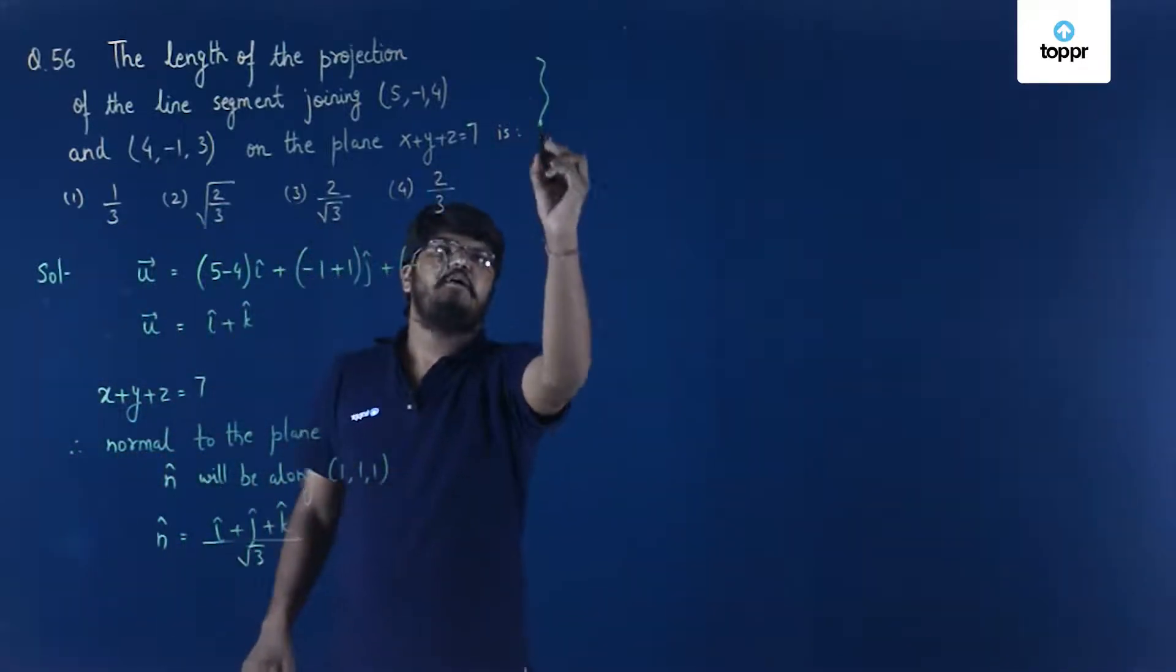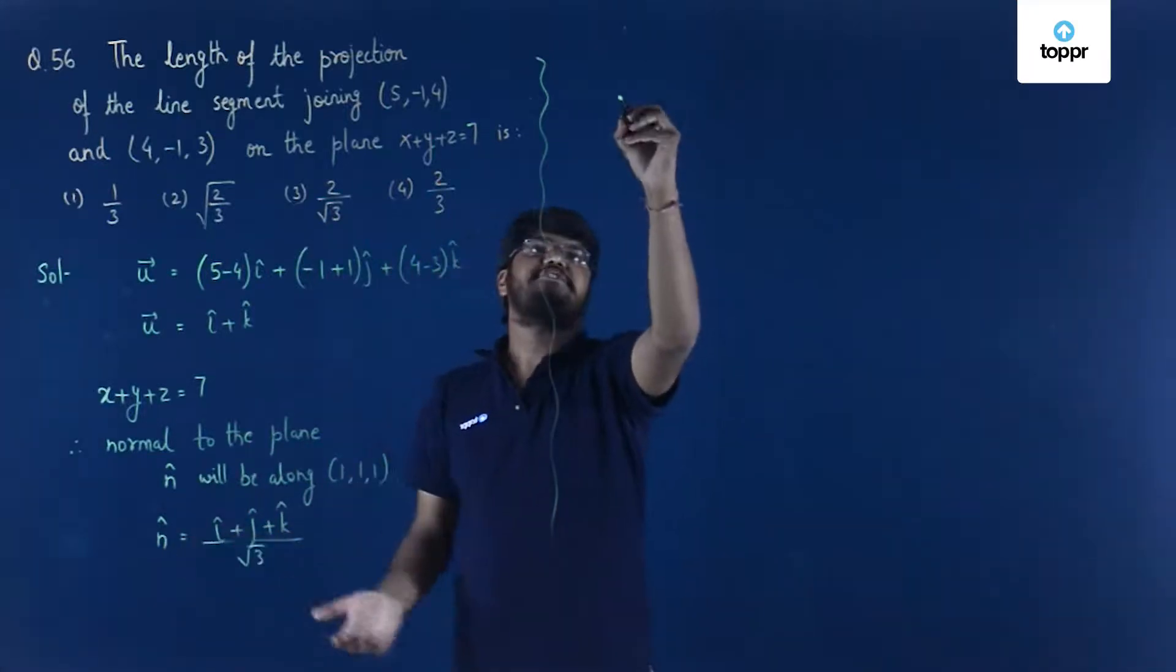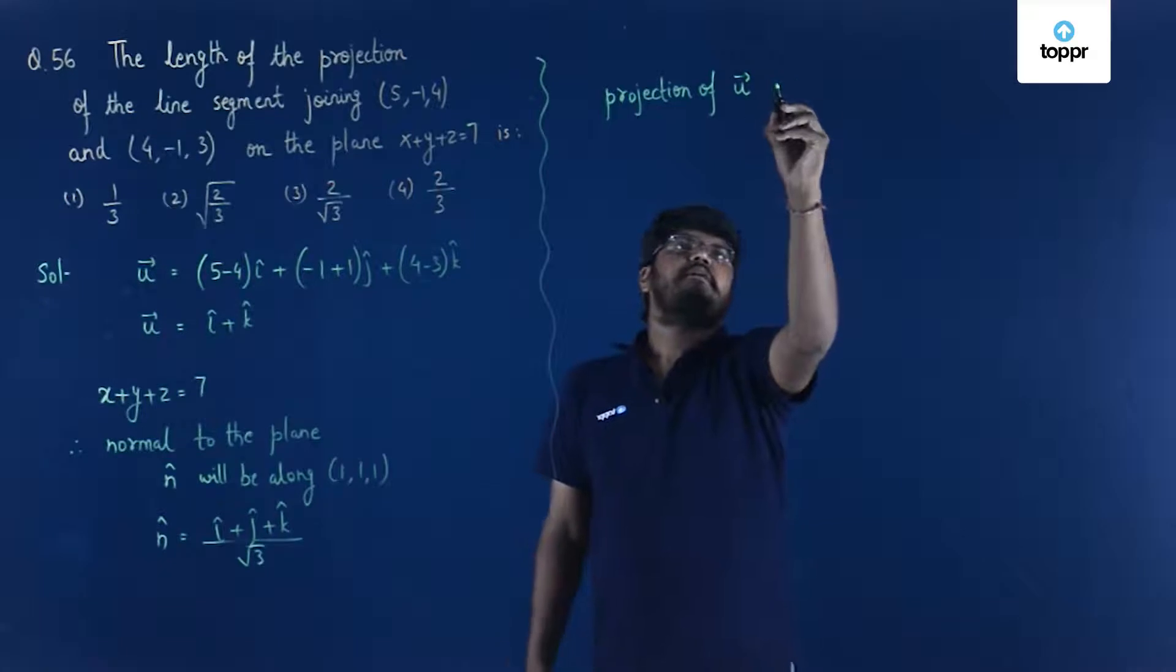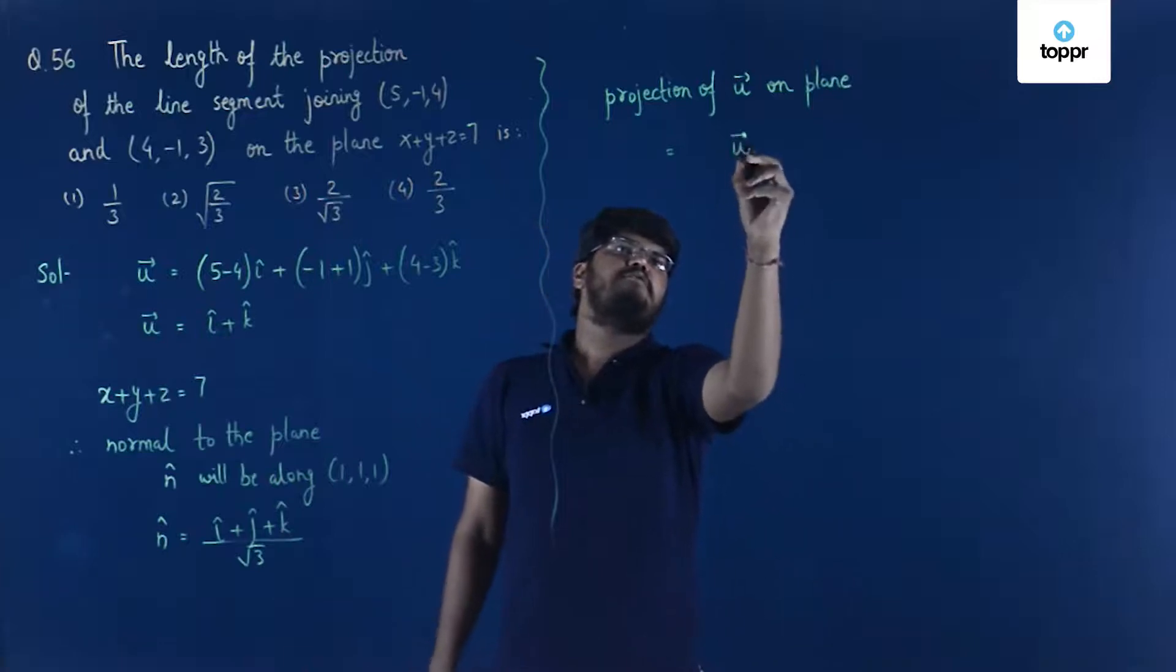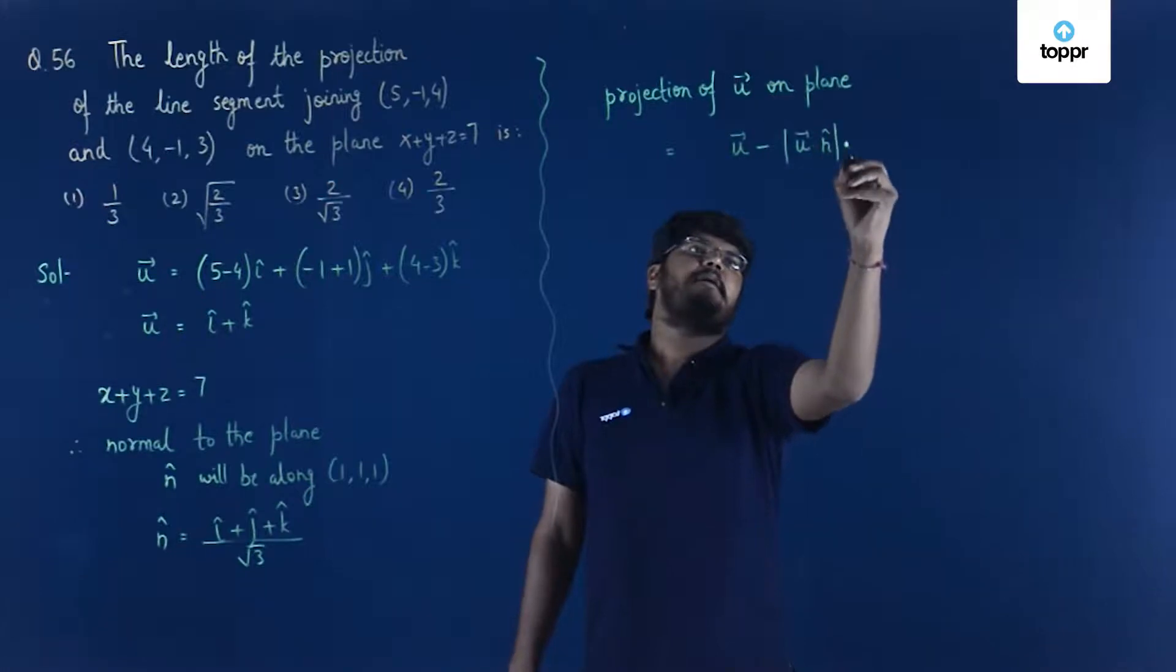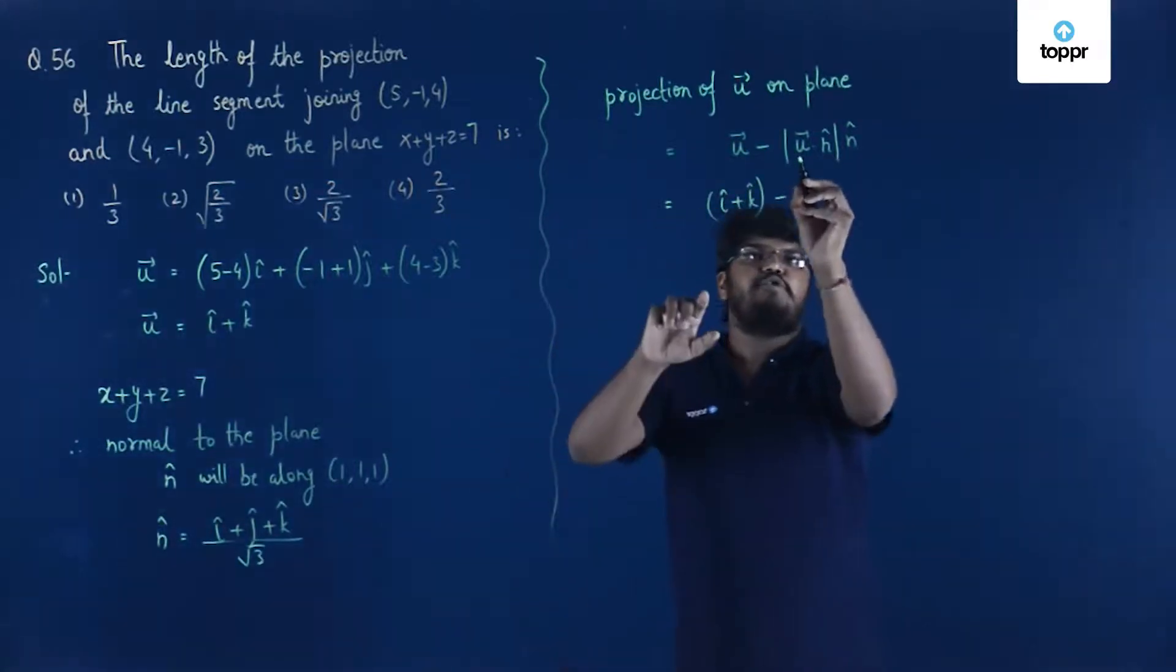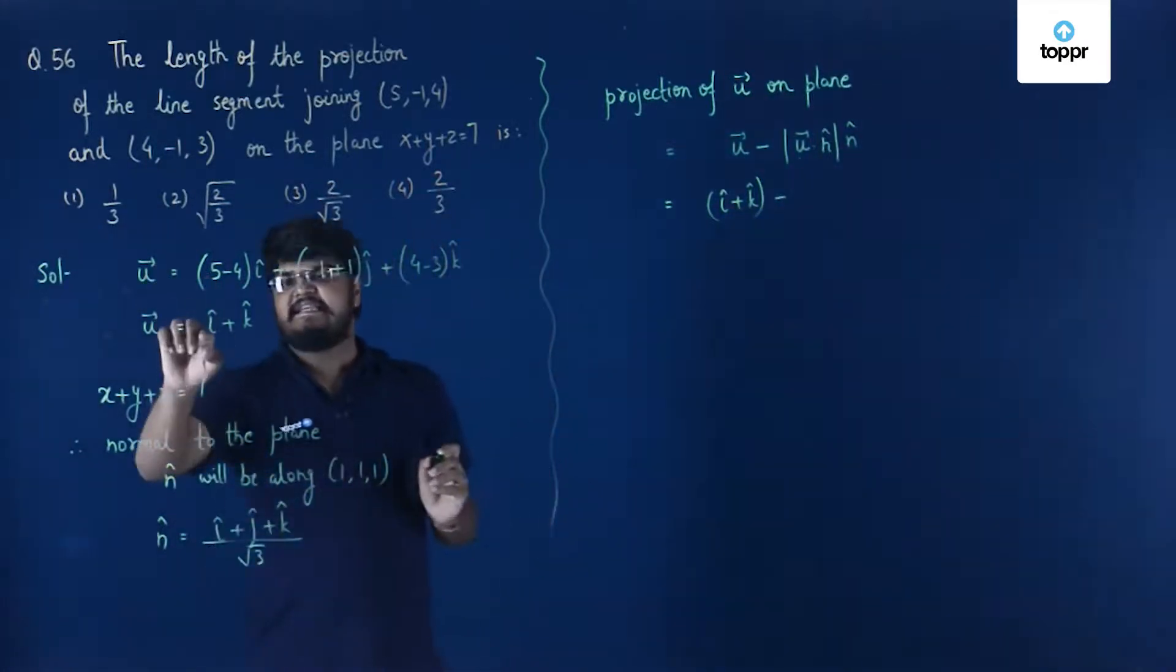Now since we already have our n cap, all we have to do is find out the projection. So projection of u vector on plane is actually equal to u vector minus |u vector · n cap| n cap. So it will be u vector, which is i cap + k cap, minus u vector dot n cap. You can see that n cap is (i cap + j cap + k cap) / √3, and u vector is i cap + k cap. So except for j cap, both coefficients of i and k will add: (1+1) = 2.